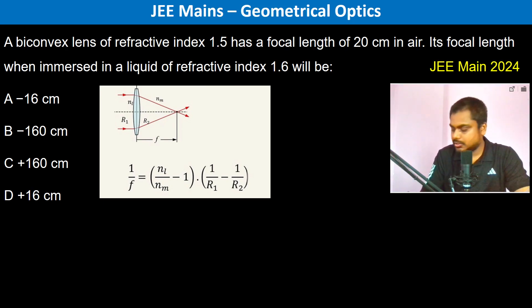A biconvex lens of refractive index 1.5 has a focal length of 20 centimeter. So this is the lens maker's formula. Therefore we have 1 by 20 centimeter is equal to n1 which is 1.5 divided by 1 minus 1 into 1 by r1 minus 1 by r2. So this is the first equation.